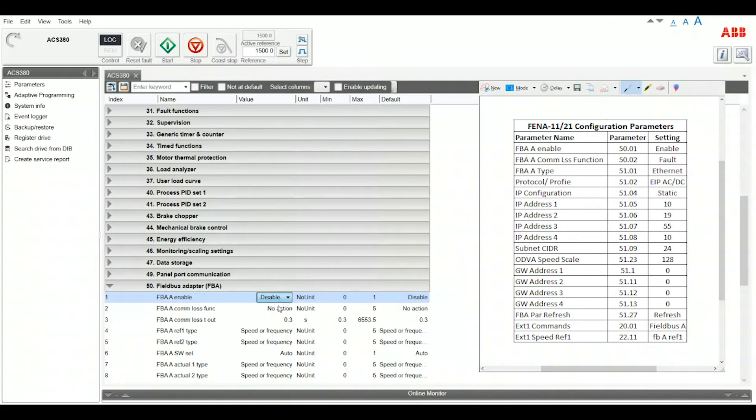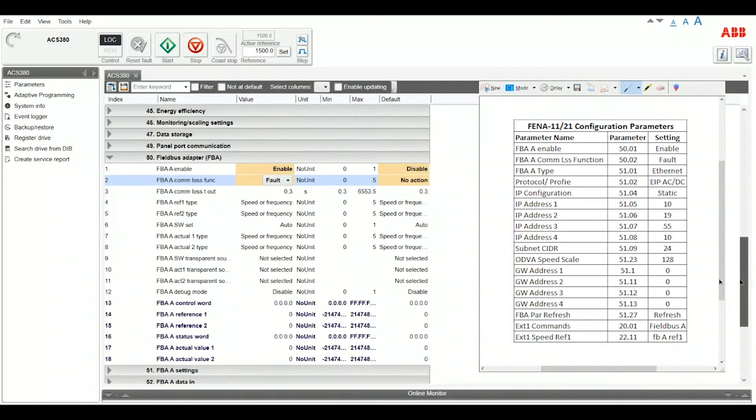We want to change that to enable and then the second one field bus comm loss. So what is the reaction from the drive if it does lose communication. You can set it to fault, warning, use the last speed reference. So for now we'll go with fault and we're going to continue going down this list for each variable and plugging them into our parameters.